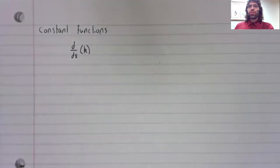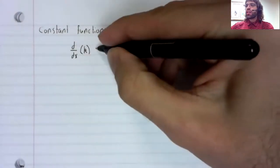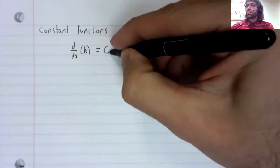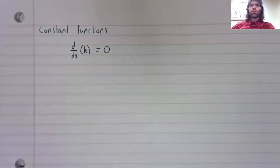So what should the rate of change be of a function that never changes? The derivative of a constant function is zero.